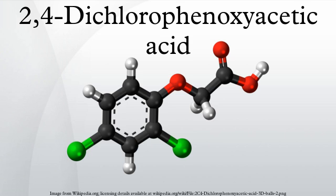2,4-D is most commonly used for weed control in lawns and other turf, no-till burndown, control of weeds and brush along fences and highway and railroad rights of way, conifer release, grass hay fields and pastures, cereal grains, corn and sorghum, and as a synthetic auxin analog.